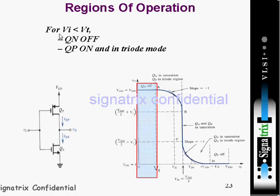The region of operation where Vi is less than Vt: Qn is off and Qp is on in triode region. When input voltage is less than threshold voltage, Qn is off. For pMOS, conditions are different — both voltages are negative, so Qp is on. In this region, Qp is on, so Vdd supply is coming through and you are getting maximum voltage at the output.